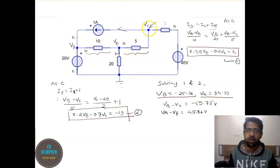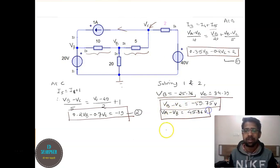The voltage across 5 ohm resistance is VB minus VC. Solving that we get the answer for voltage across 5 ohm resistance, and similarly we get the answer for the voltage across 10 ohm resistance.